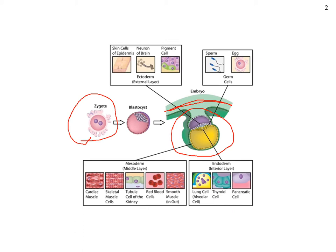Each layer is going to be called a germ layer. One of them is called an ectoderm, another is called a mesoderm, and another is called the endoderm. The ectoderm is going to become your epidermis, but it's also going to become your nervous system. That mesoderm is going to become your connective tissue. The endoderm is going to do the endocrine system. All connective tissue is derived from the mesoderm — that middle layer.